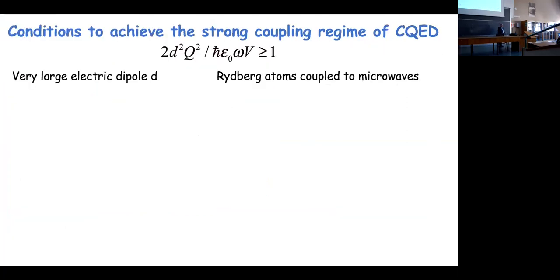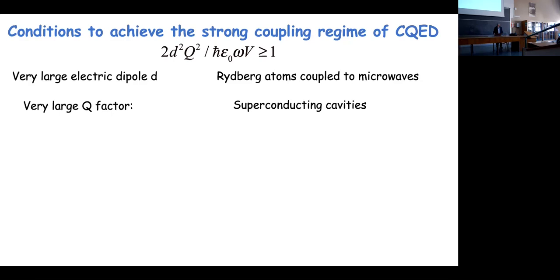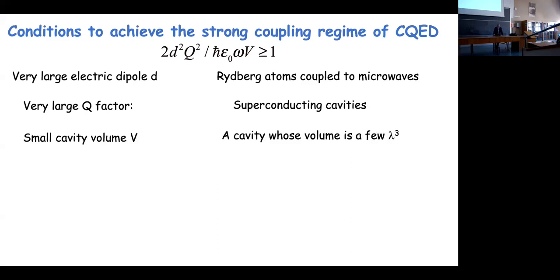For strong coupling you need the opposite condition. You want a very large electric dipole — achieved with Rydberg atoms coupled to microwaves, since the dipole is proportional to the square of the principal quantum number. You need a very large Q factor, achieved with superconducting cavities in the microwave domain. You want a very small cavity volume, just a few lambda^3 — in the microwave domain lambda is about one centimeter, so the cavity volume is about one cubic centimeter.